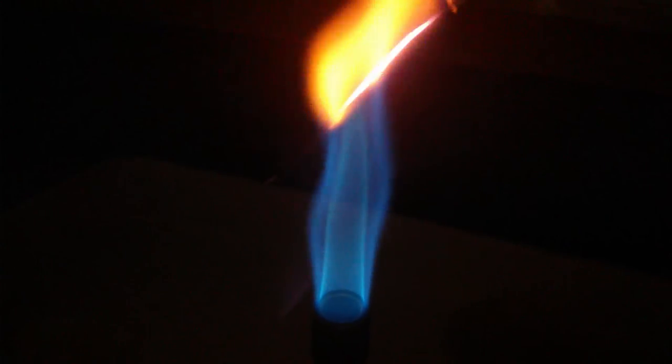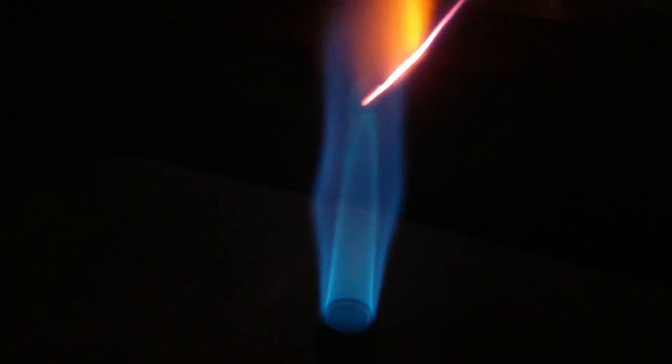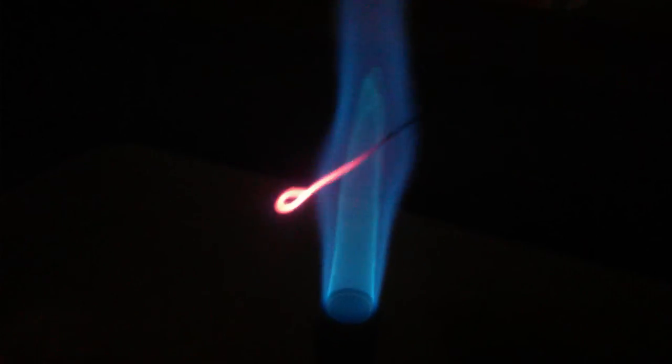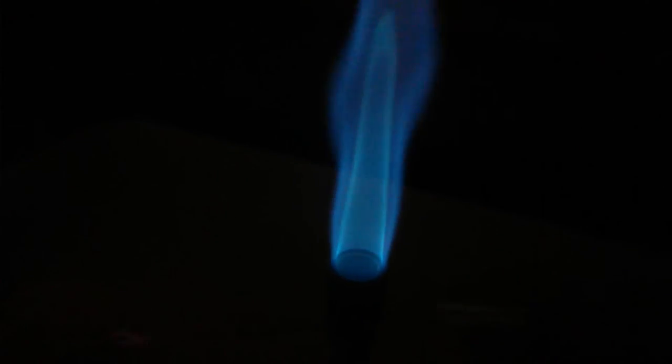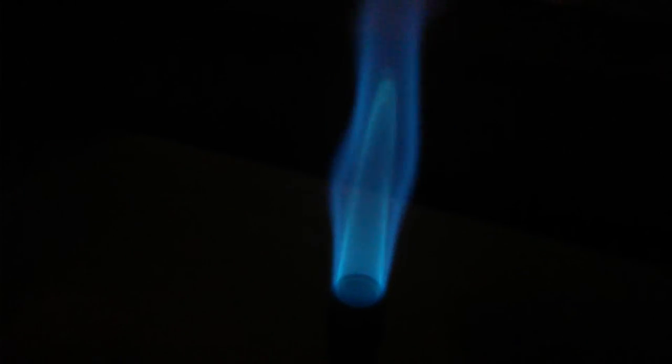If you place your loop inside at the tip of that flame, the small flame in the middle, it's going to become red hot very quickly and this is because this is the hottest point of the flame.